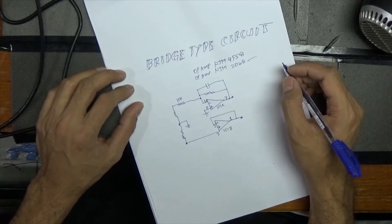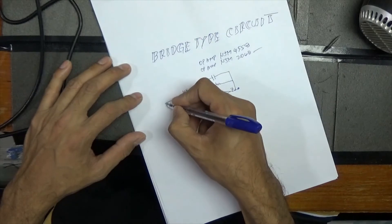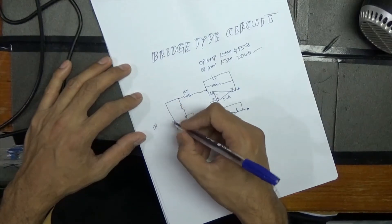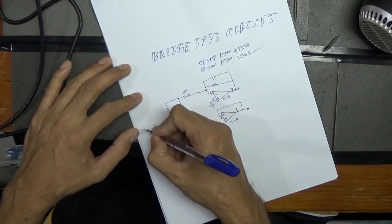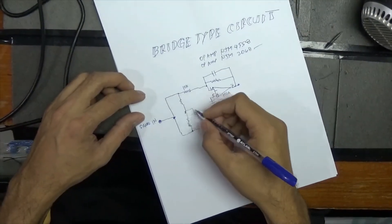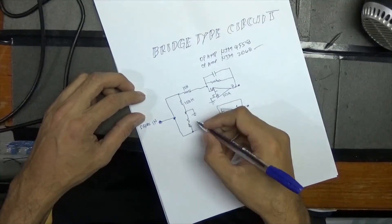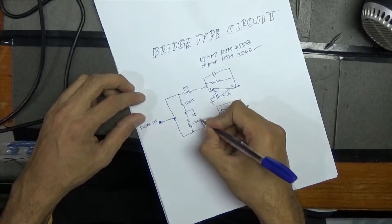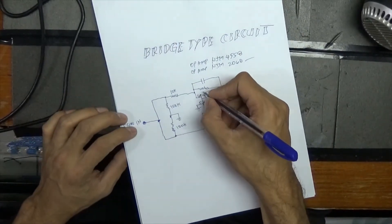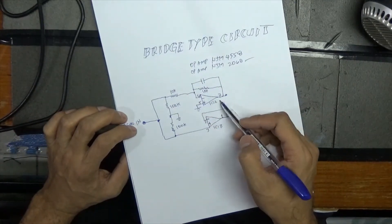Now, the input is here. Signal in. The value of this one is 100K, another 100K resistor, and this one is 10K bias resistor for pin number six and seven.